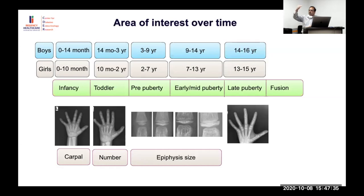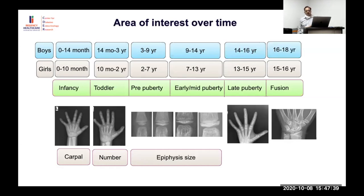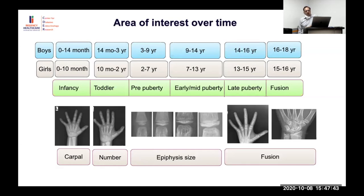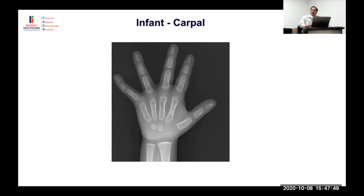Each bone gives an average and these are combined. With older children, assess phalangeal fusion, and even older, look at long bone fusion — how radius and ulna have fused. A few example X-rays will now illustrate this approach.